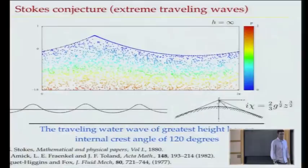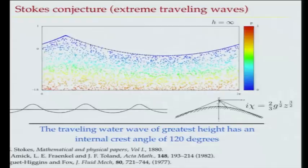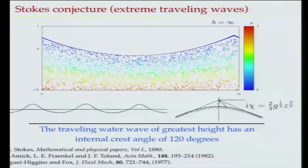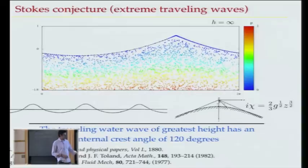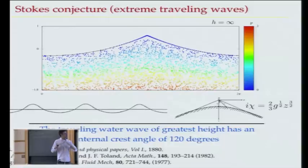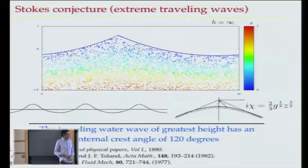Stokes had done a three or five term asymptotic expansion of a traveling water wave. You notice that the crests of the waves sharpened compared to the troughs. He was imagining what would happen as you increase the amplitude of the wave — eventually it will probably break down. He conjectured that at some point there would be a sharp singularity forming. He conjectured this in 1880, and was also aware of this self-similar wedge-shaped solution, which is a perfect wedge.